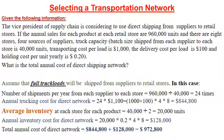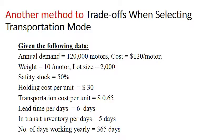The total annual cost of direct shipping network = annual trucking cost ($844,800) + annual inventory cost ($128,000) = $972,800. This method requires data on annual demand, number of stores, number of suppliers, batch size for full truck loads, transportation cost per load, delivery cost per load, and holding cost per unit.